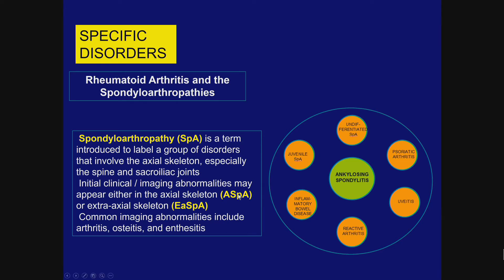This has led to these abbreviations in the literature. Indeed, in some cases the abnormalities remain only in the extra-axial skeleton and never involve the axial skeleton. In SPA, there are certain findings that are very characteristic, differing from those in rheumatoid, and we will be pointing those out in the next few minutes.